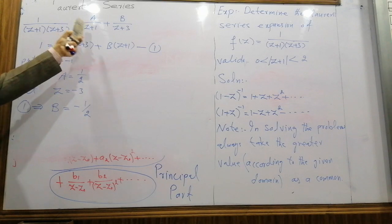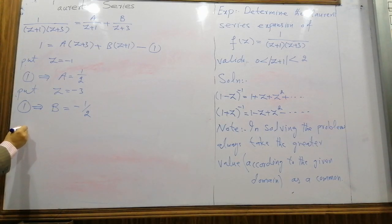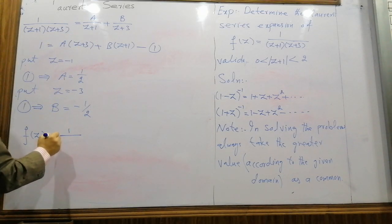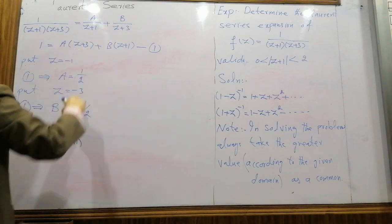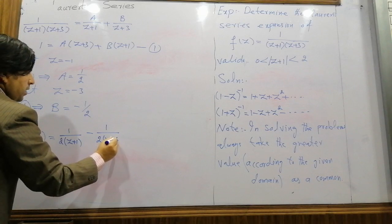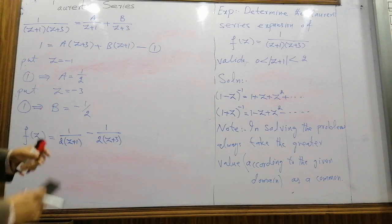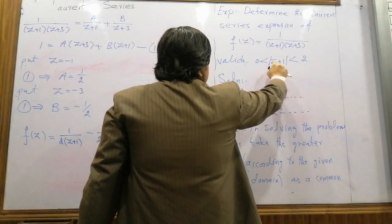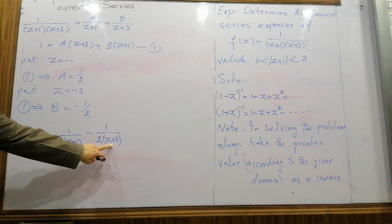Using these values, the function f(z) is given by f(z) = 1/[2(z+1)] − 1/[2(z+3)]. Now we have to find the Laurent series of this function. From the domain condition the expansion is in terms of (z+1), so the first term is already in Laurent series form.